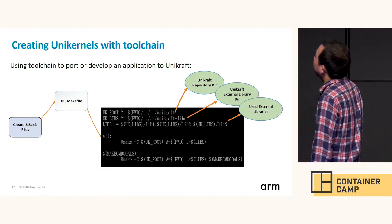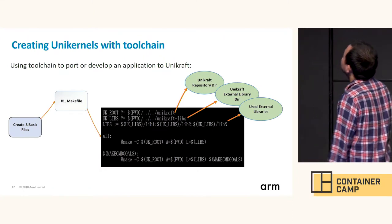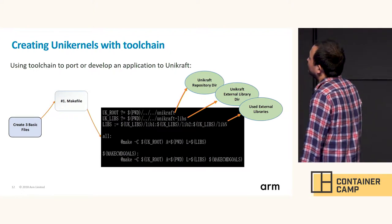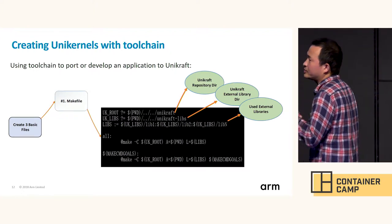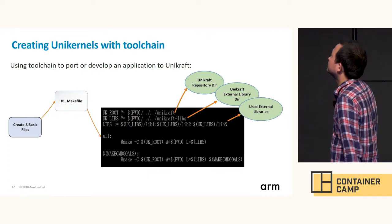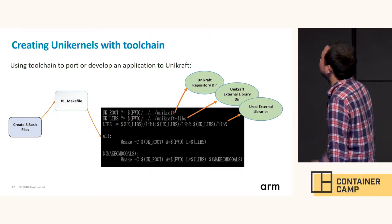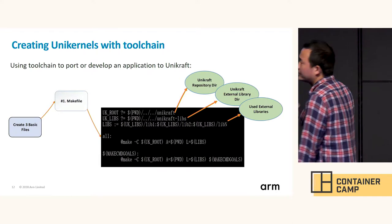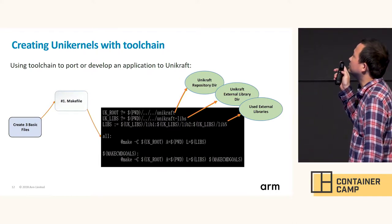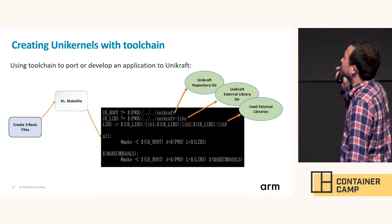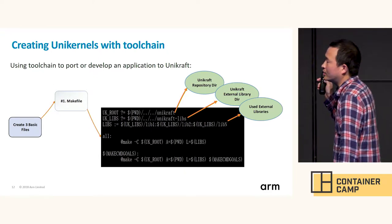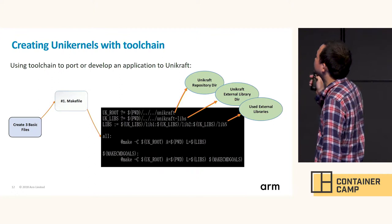Let's see how to use the toolchain to port or develop an application. If we want to create a UniKraft application, we need three basic files. The first is a makefile, which is very similar to the makefile of a Linux kernel module built outside the Linux tree.